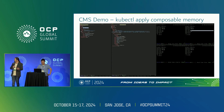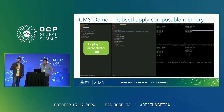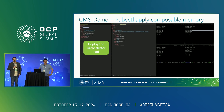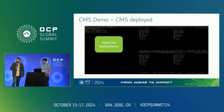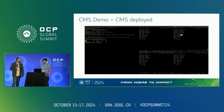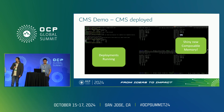Essentially, you deploy a familiar-looking YAML file. It pulls the orchestrator from the container, loads it in, and creates a namespace in Kubernetes. You add a little bit to your pod deployment for the init to ask for the memory claim. The highlighted bit shows it sitting at zero memory for the NUMA node — you run kubectl apply as you always would, and memory shows up.